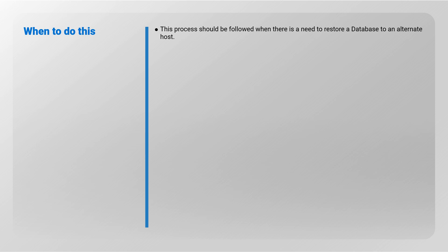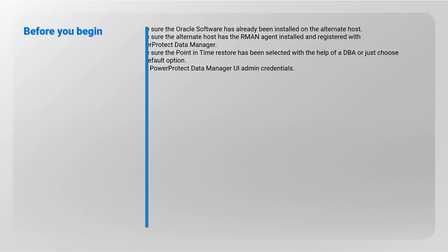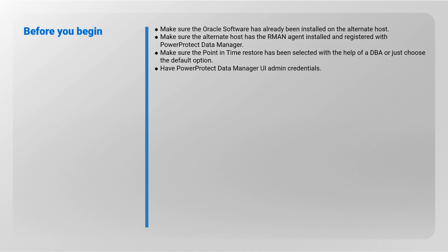Before you begin: make sure the Oracle software has already been installed on the alternate host; make sure the alternate host has the RMAN agent installed and registered with PowerProtect Data Manager; make sure the point-in-time restore has been selected with the help of a DBA, or just choose the default option; and have PowerProtect Data Manager user interface admin credentials ready.